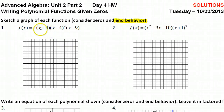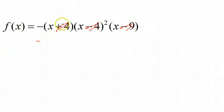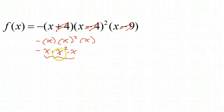Let's count the x's. If you take away the parentheses — take away the plus four, the minus four, and the minus nine — and just focus on the variables, then we have minus x, and then this is like x squared, and this is another x. So basically we have x times x squared times x. If we put all this together, this tells me the degree of this function. So x times x squared is x to the third, then x to the fourth.